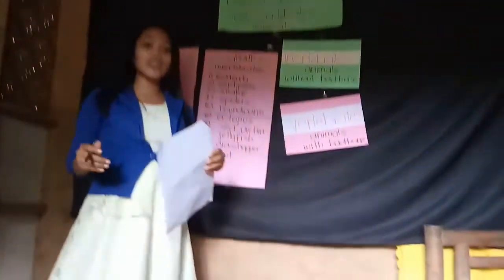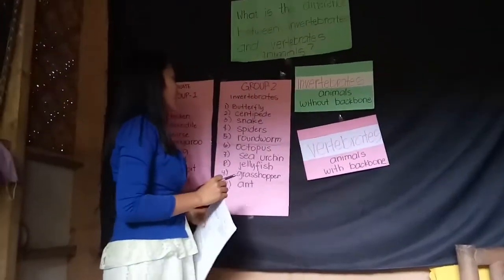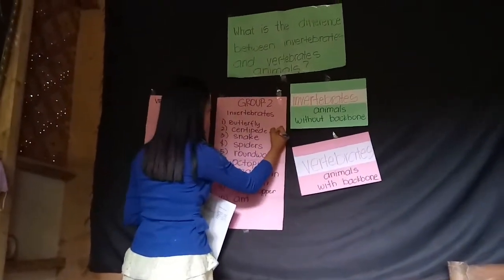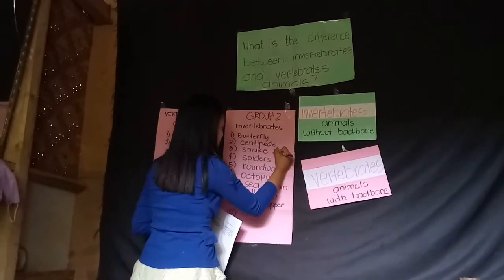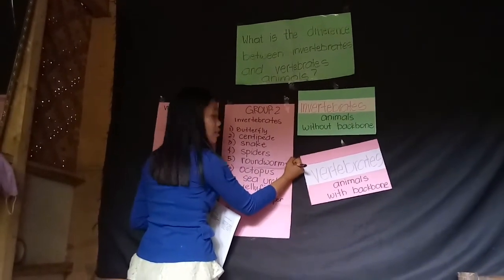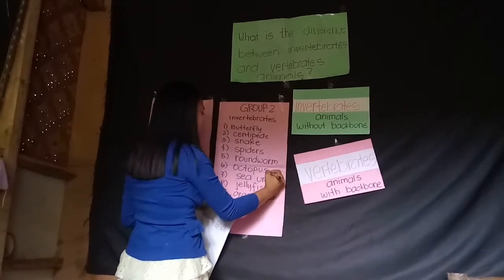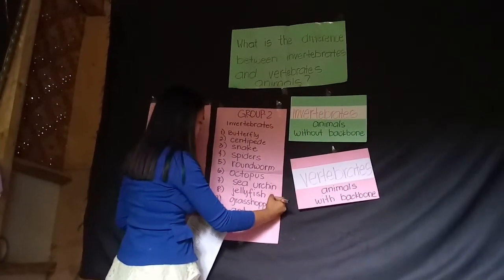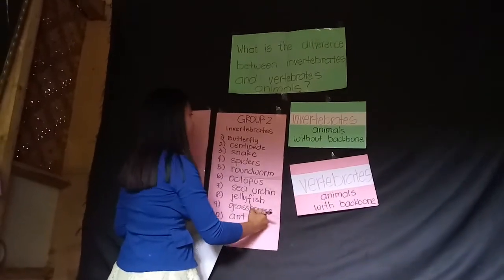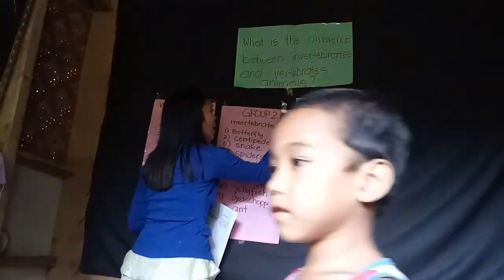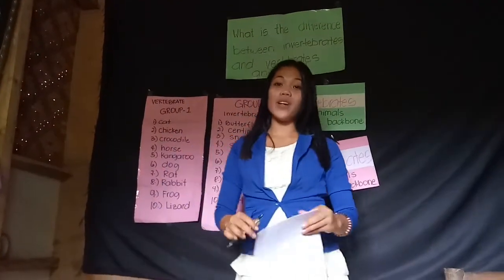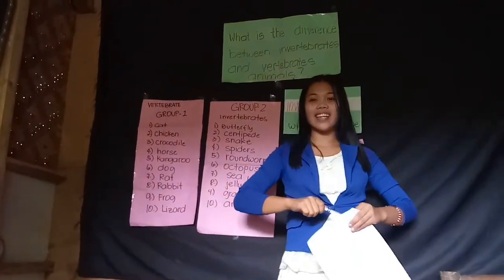Group two is to list down ten examples of invertebrate animals. Butterfly, centipede, snake, spider, groundworm, octopus, sea urchin, jellyfish, grasshopper, ant. Very good. The score is ten over ten. Everyone got our lesson for today and understood it.